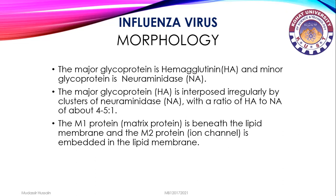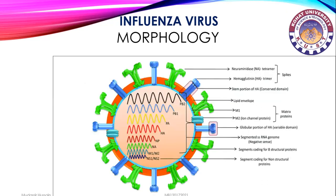The major glycoprotein is hemagglutinin (HA) and the minor glycoprotein is neuraminidase (NA), with a ratio of HA to NA of about 4:1. The M1 protein, also known as matrix protein, is beneath the lipid membrane, and the M2 protein, also called the ion channel, is embedded in the lipid membrane. The function of M1 protein is to give additional support to the envelope.